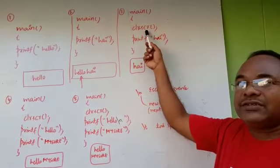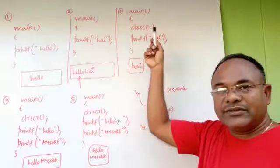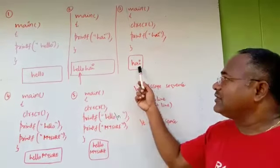So once I use CLR SCR it clears the screen. What do you mean by clearing the screen? It clears the output of earlier programs. You get only high.